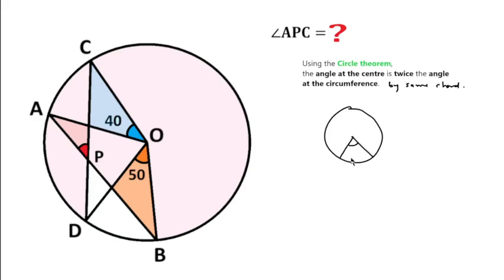If the angle at the center is 2x for this chord, then the angle made on the circumference will be half, that is x, by the same chord. If the picture looks like this, then this angle should also be x because it is made by the same chord.